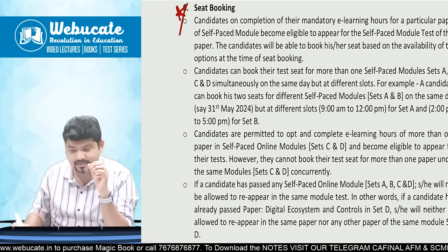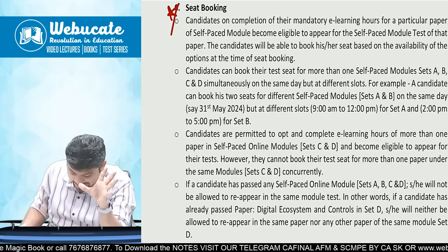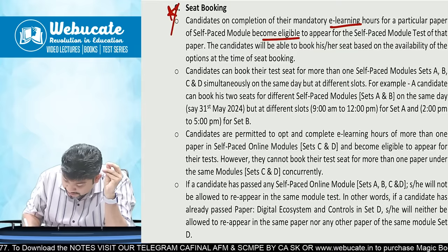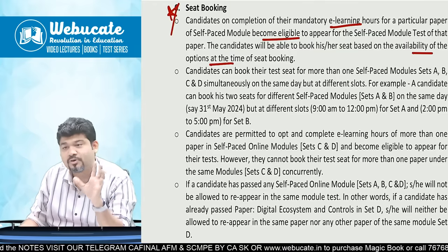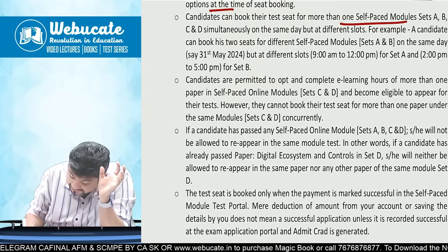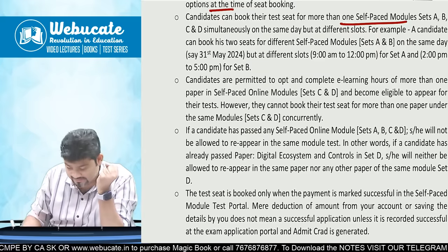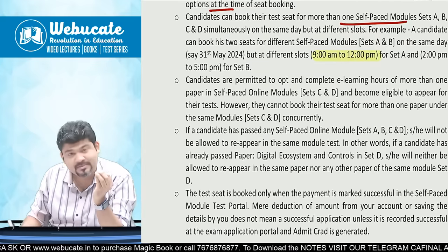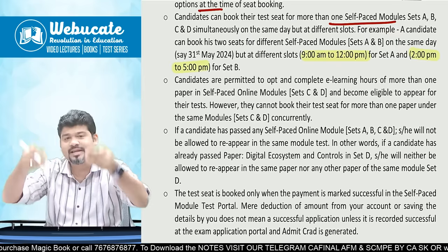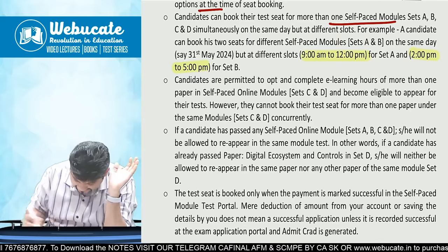Seat booking is very important — this PDF is being shared on the Telegram channel. Candidates who complete their mandatory e-learning hours can book their seat based on availability. Importantly, candidates can book their test seat for more than one self-paced module on the same day. For example, you can give Set C from 9 AM to 12 PM and Set D from 2 PM to 5 PM — or Set A and Set B the same way — though it's next to impossible, the institute has given this opportunity.